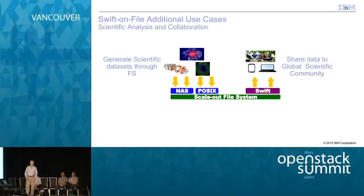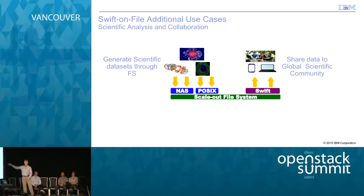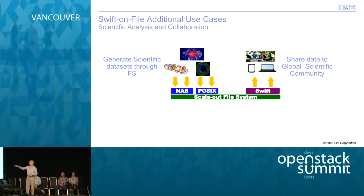Now for other interesting use cases with this architecture. The first is a scientific collaboration and analysis use case. Customers who have invested a lot in file-based analytic applications are generating petabytes of data, and when finished they want to publish results. With Swift on file, they can run their applications, publish results into the scale-out file system, and then use the object interface to selectively make that data available through Swift — instantly available worldwide, with Keystone or other authentication mechanisms to control access.